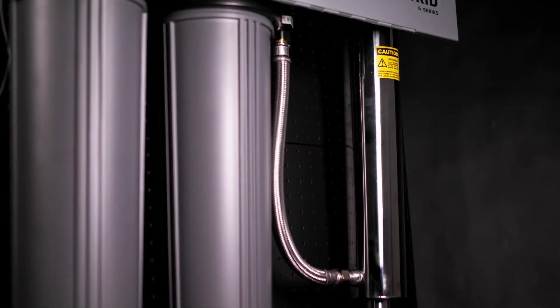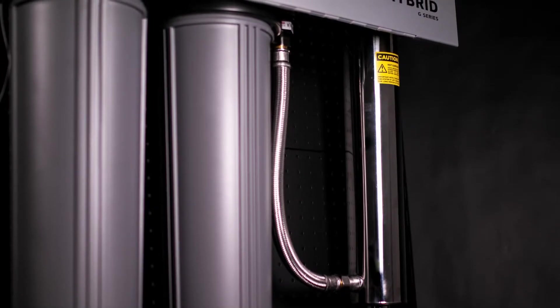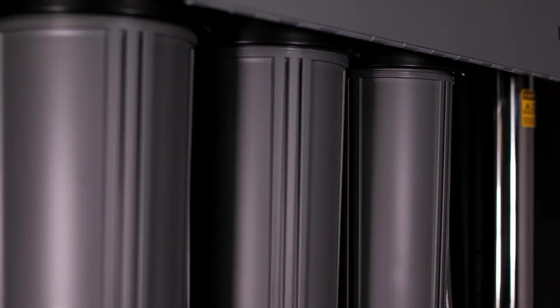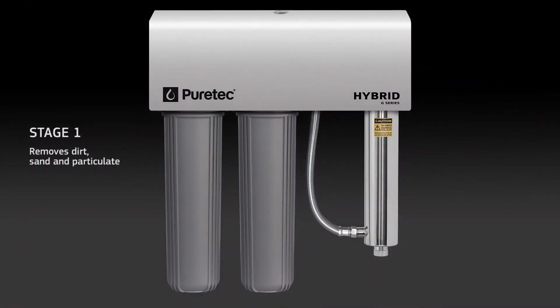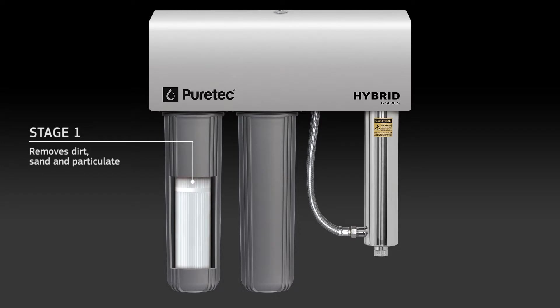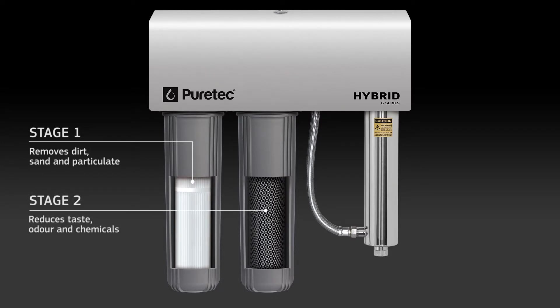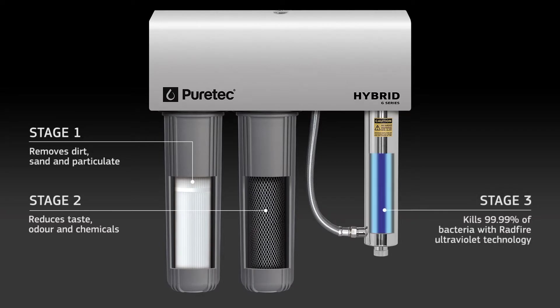Depending on water contamination levels, you can select from dual or triple-stage pre-filtration before the UV. The dual-stage systems start out by removing dirt, sand and particulate in the first stage, and then go on to remove taste, odor and chemicals in the second. The water then goes into the ultraviolet sterilizer.